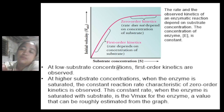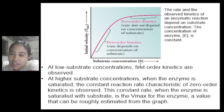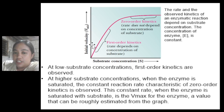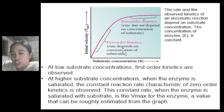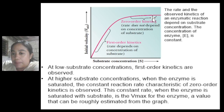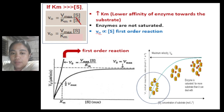The rate and observed kinetics of an enzymatic reaction depend on substrate concentration while the enzyme concentration is held constant. At low substrate concentration, first-order kinetics is observed. But at higher substrate concentration, where the enzyme is saturated, the constant reaction rate characteristic of zero-order kinetics is observed. This constant rate means the enzyme is saturated with substrate, and this is the Vmax for the enzyme, a value that can be estimated from the graph.